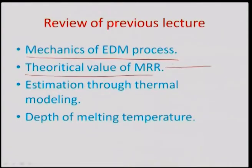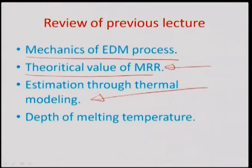The melt pool increases the distance between the two electrodes, causing the field to drop below the breakdown potential. The spark then activates at another closest-distance point, traveling around and removing material. We theoretically estimated the material removal rate by assuming a cylindrical heat source on an infinite slab, modeling heat transfer from r=0 to r=a. We estimated the depth of melting temperature (Z value) to determine the crater shape and MRR through thermal modeling.